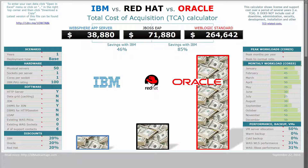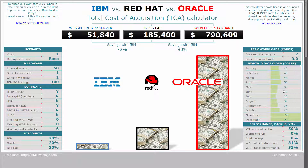Those two non-production environments — performance testing and quality assurance — are not used permanently. They're used a couple of times a year for about one month at a time, meaning two months total usage. In size they're roughly the same as the production environment. So we enter the number two for months of non-production usage. The peak-to-normal ratio is three, because those pre-production environments are equivalent in size to production — meaning for two months a year you have triple the workload, and for the remaining ten months only one-third.